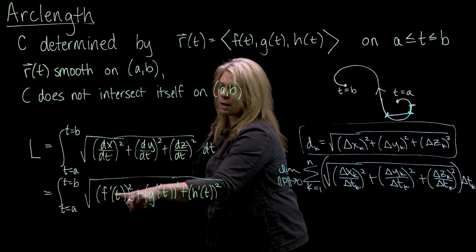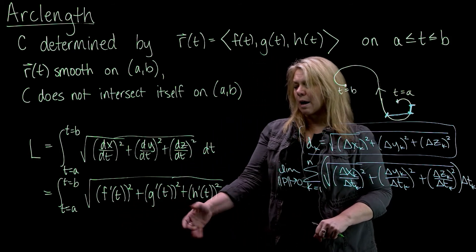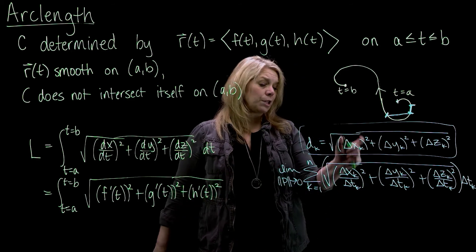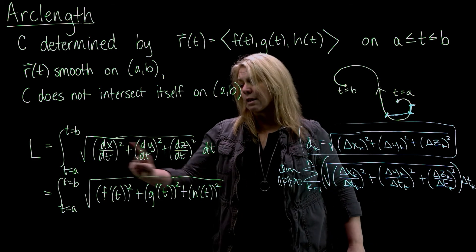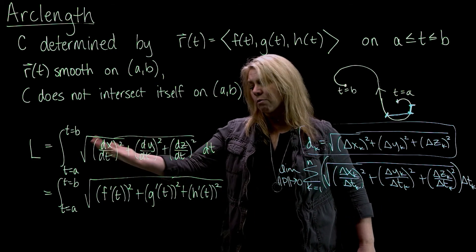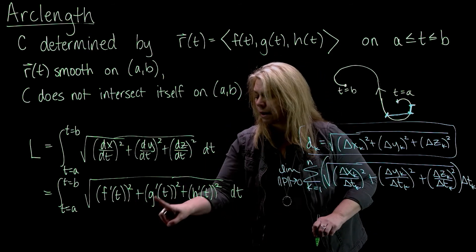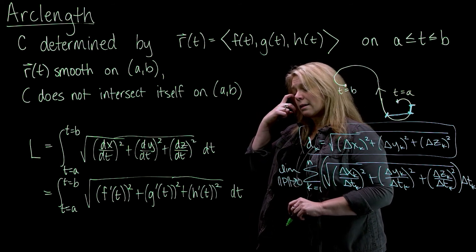Sometimes I see students try to use this and they'll just use f, g and h instead of f prime, g prime and h prime. That's why I think connecting it to this idea of distance formula, change in x, change in y, change in z is sometimes helpful because then if you think about it that way, you're going to be thinking about change in and so you won't accidentally use the wrong thing here in the argument of your square root.